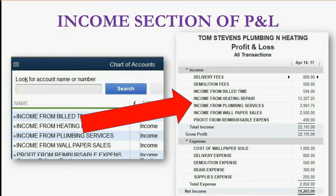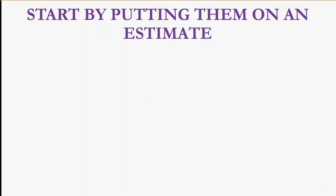If you look at a typical QuickBooks profit and loss report, the income section is on top and the expense section is below. If you want to see each area that money is coming in from, you would have to create separate income accounts so that those accounts would show up at the top of the profit and loss and show you how much money came into each of those income accounts to get the total income, and then eventually subtract out the expenses for the net income.